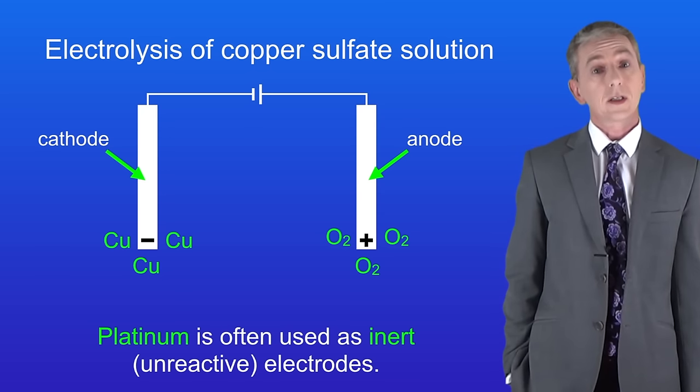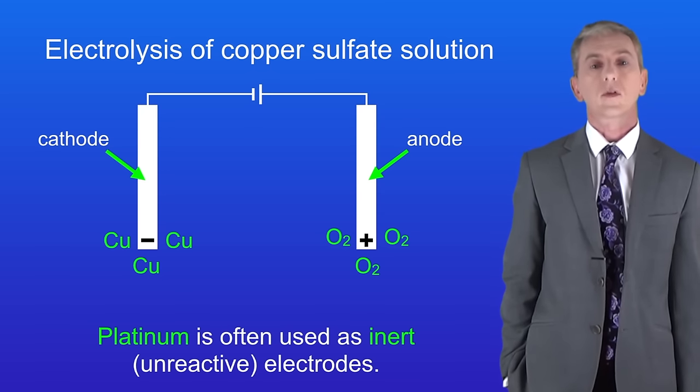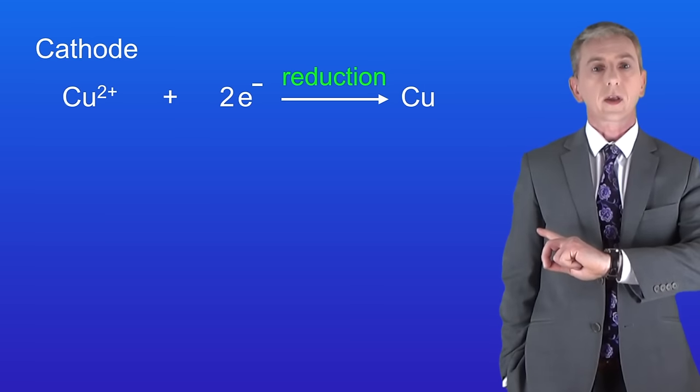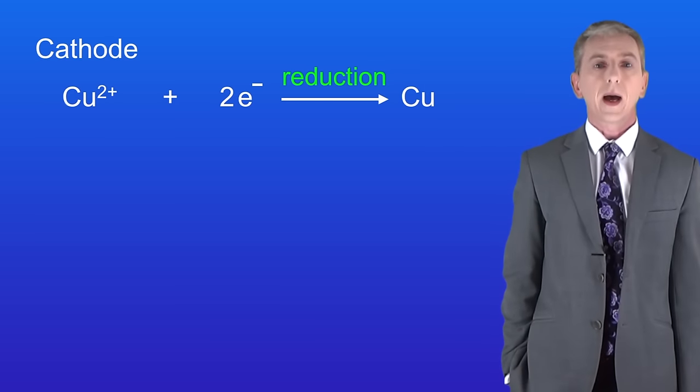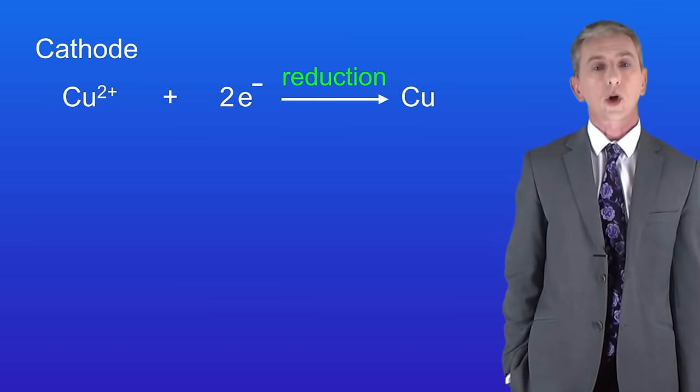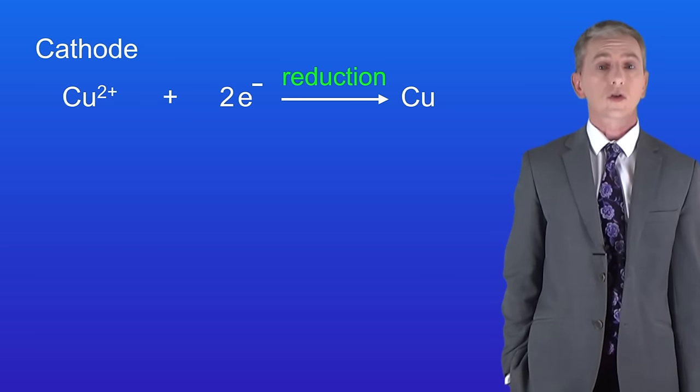Now if you're doing the higher paper then you need to know the half equations at the electrodes. Here's the half equation for the cathode. The copper ions are gaining two electrons to form copper atoms. That's a reduction reaction.